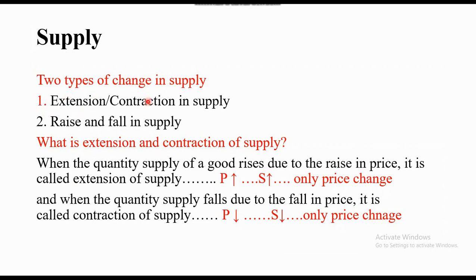In supply, there are two types of changes: extension and contraction. This is totally related to the demand concept. Extension and contraction are only due to a change in price. When price increases, supply also increases because both have a positive relationship — this is called extension of supply. When price is reduced, supply also reduces — this is contraction. This is because when price increases, the producer's profit margin increases.